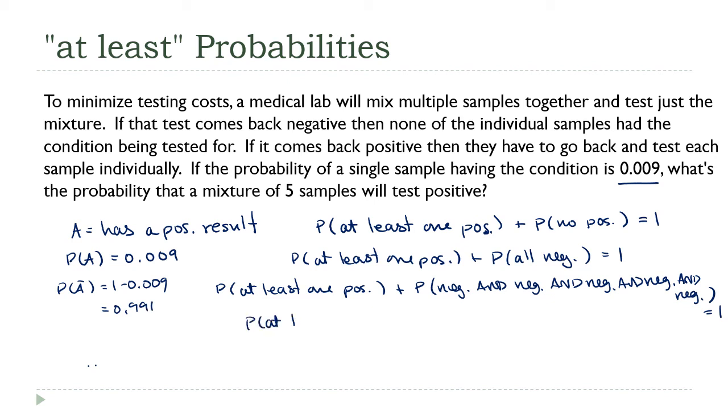This is the probability at least one positive plus, now I have an and. These are independent events. There's no reason to believe that one sample somehow affects the other. So all I have to do is multiply 0.991 by itself five times. The probability of getting at least one positive is one minus 0.991 to the fifth, which is 0.0442.